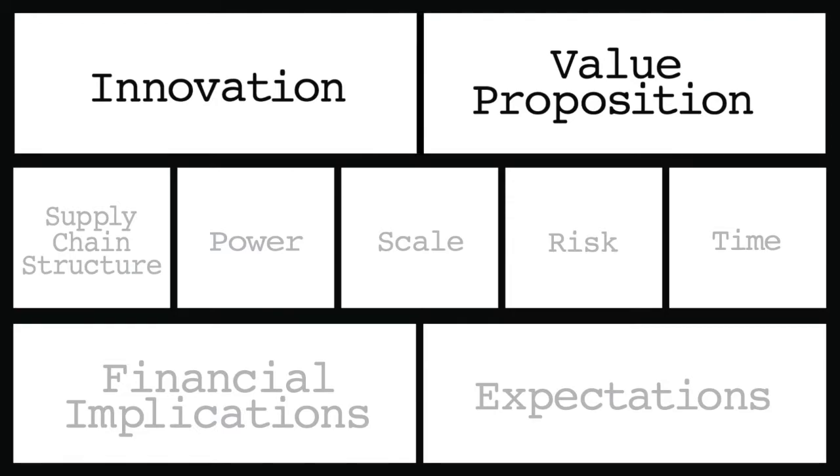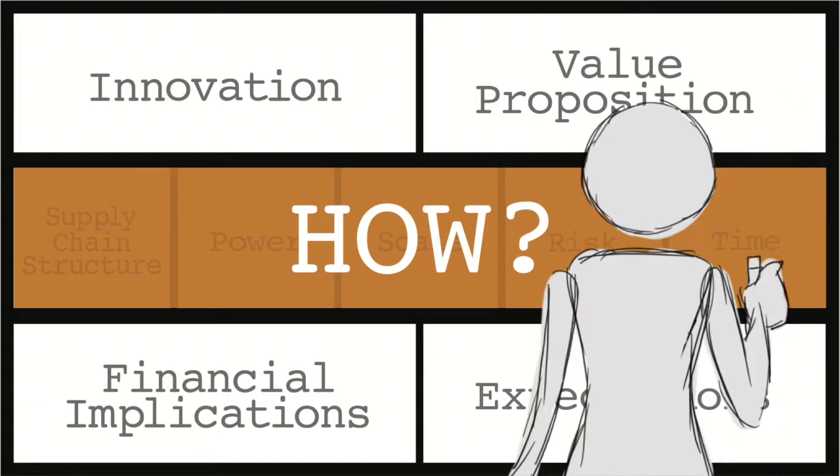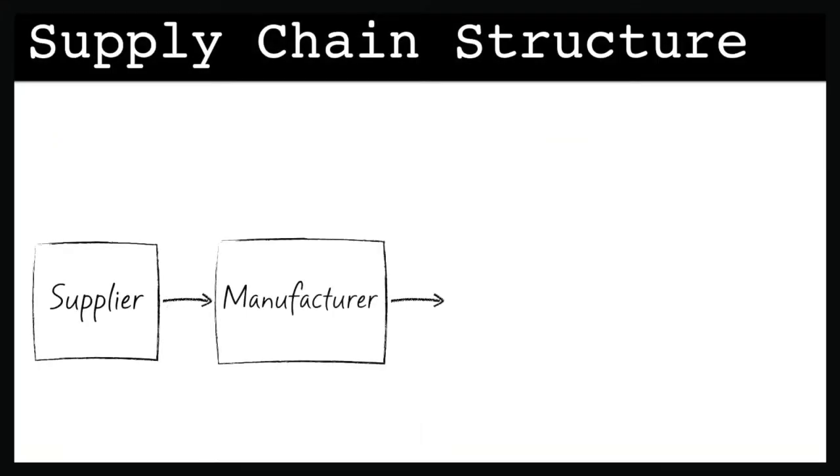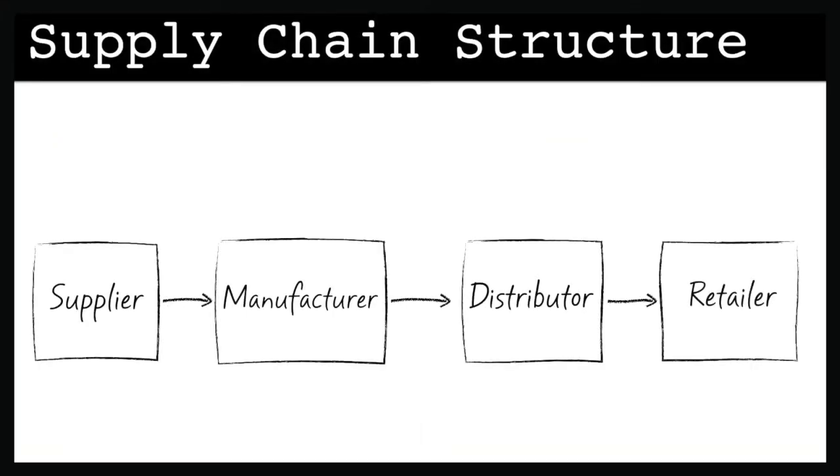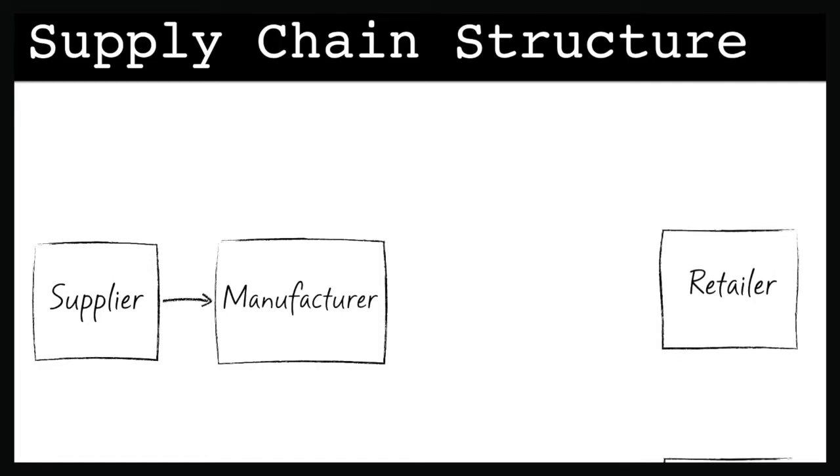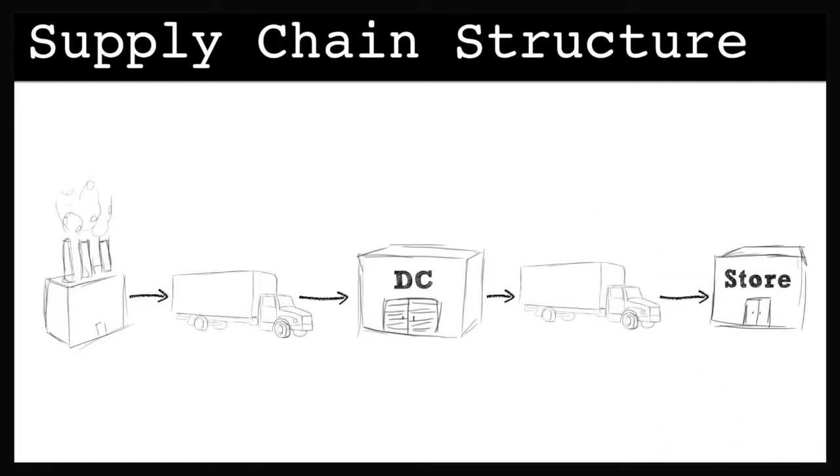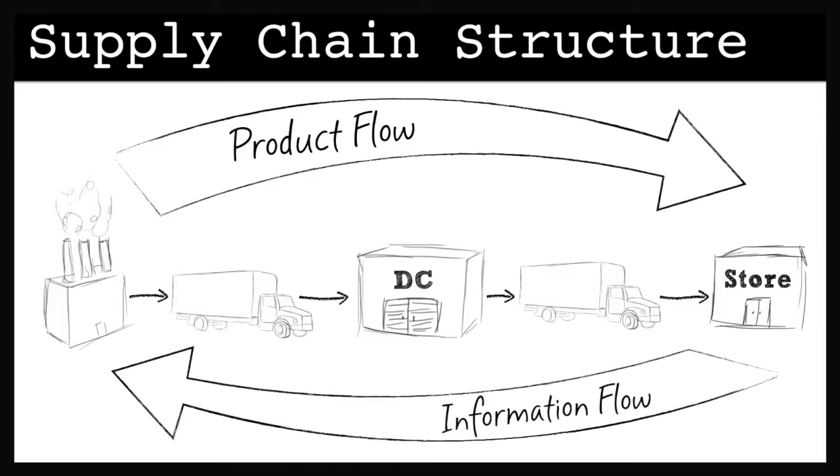Now, move to the second row to explore how the innovation will be sustained. First, describe the impact on the supply chain structure. A radical innovation will change the supply chain by adding or removing tiers, or by adding or removing customers or suppliers. If the innovation is less radical, the product flow and information flow need to be assessed critically.